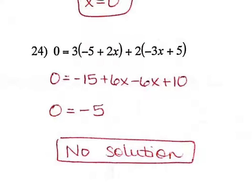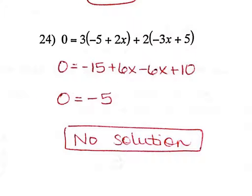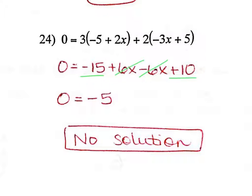Last problem, question 24. First, distribute. Negative 6x and positive 6x cancel each other out. Combining negative 15 and 12 on the same side gives negative 5. That leaves 0 equals negative 5, which is not a true statement, so question 24 gives no solution. Please come to tutoring if you need help — I think we'll spend most of the time going over word problems so you feel really good about those before the test tomorrow.